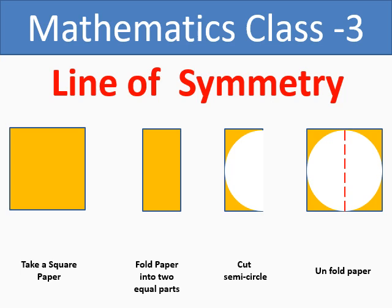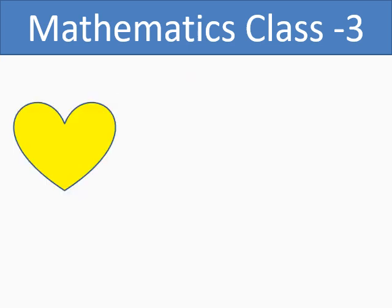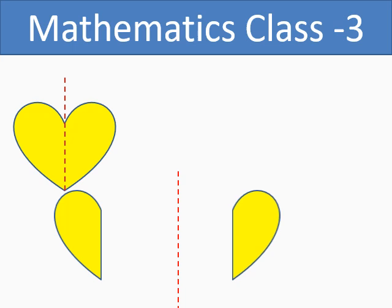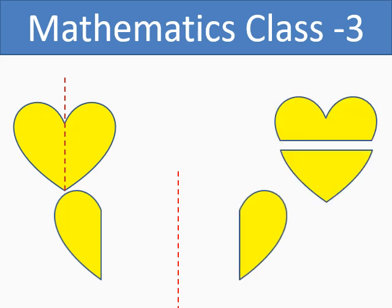Now let us see some objects with one line of symmetry. Let us take a heart. Draw a vertical line — so you will get two equal halves along this vertical line. If you cut the heart shape horizontally, then you do not get equal halves along the horizontal line.